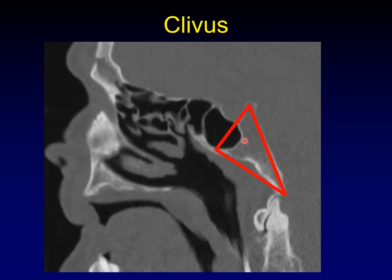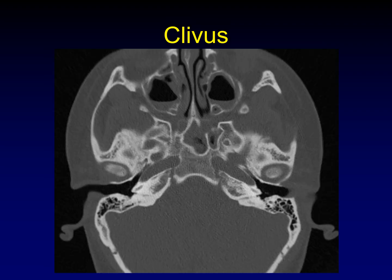Here's that picture of the clivus again. It's a triangular bone, at least on sagittal projection, that forms the central skull base in the midline. On a little image it perhaps looks a bit more rectangular. If you look carefully, you can still see the fusing plane in the midclivus in this young patient. In children, this is an obvious gap between the upper and lower clivus, and that's totally normal. This one's sort of partially fused — also normal.